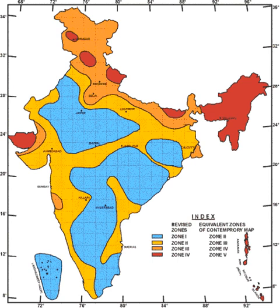The latest version of the seismic zoning map of India, given in the Earthquake-Resistant Design Code of India IS 1893 Part 1, assigns four levels of seismicity for India in terms of zone factors. The earthquake zoning map of India divides India into four seismic zones, unlike its previous version which consisted of five or six zones. According to the present zoning map, Zone 5 expects the highest level of seismicity whereas Zone 2 is associated with the lowest level of seismicity.